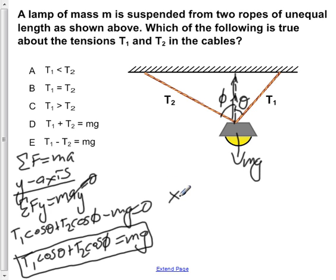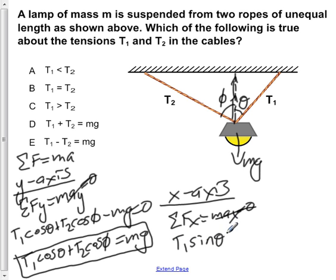But if we also look at the x-axis and apply Newton's second law, we once again are in equilibrium, so we're not moving or accelerating in the x-direction. So Ax equals zero. If we once again apply SOH CAH TOA, but this time using sine instead of cos, we would have T1 sin theta minus T2 sin phi equals zero.